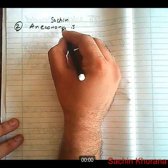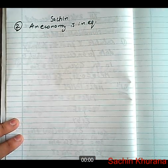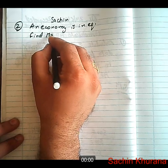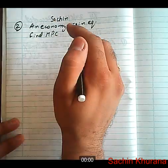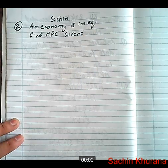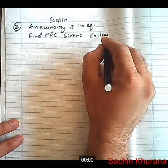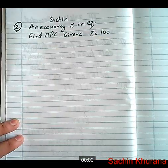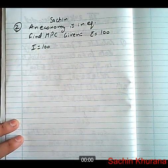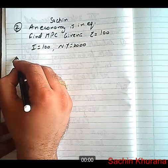An economy is in equilibrium. Find MPC when we are given the following data: C bar is equal to 100, that is autonomous consumption expenditure, and I is equal to 100.